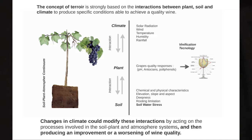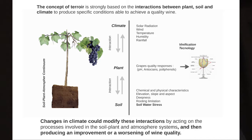The concept of terroir is strongly based on the interaction between plant, soil, and climate, in order to produce specific conditions able to achieve a specific wine quality. Grape quality response leads to wine quality. Climate change could alter this interaction, producing either an improvement or worsening in expected grape quality.